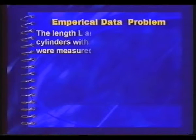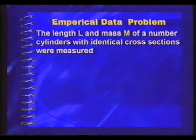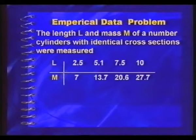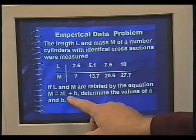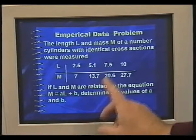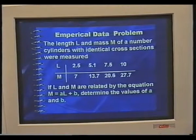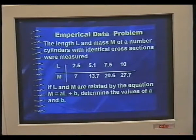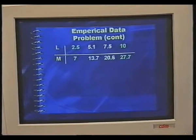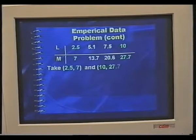Let's go straight into a problem. I've collected some information about the mass and the length of cylinders with identical cross-sections. We suspect that the values of l and m are linearly related — in other words, of the form m equals gradient times l plus an intercept. The difficulty with these types of problems is that you don't always deal with x and y but have different variables. Here we've got a and b as well, with a standing for gradient and b standing for the y-intercept. We select two points — I've selected the first and the last, but you can take other points. If one point is completely way off, you should not use it.